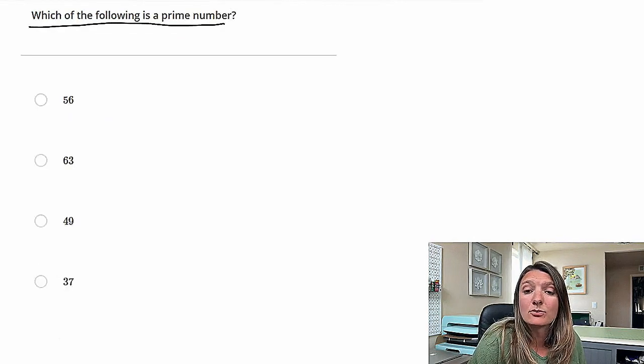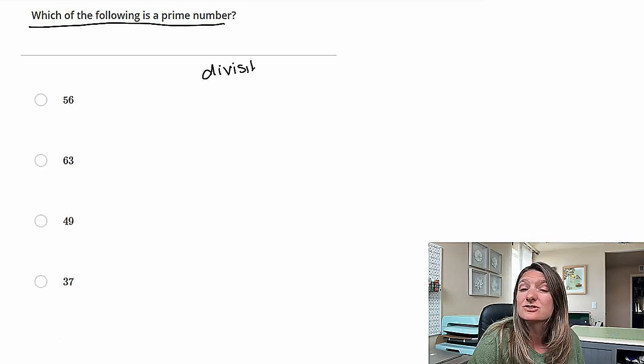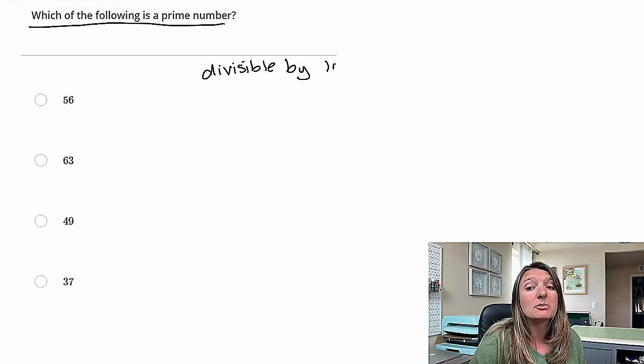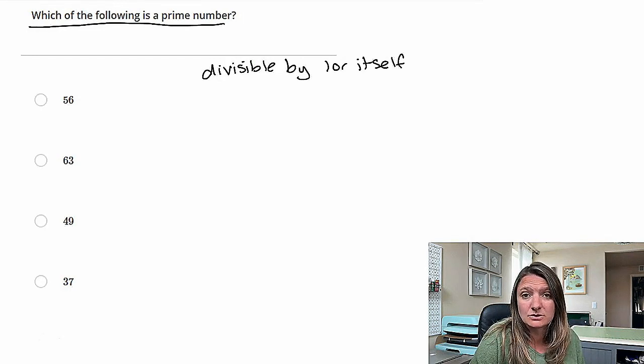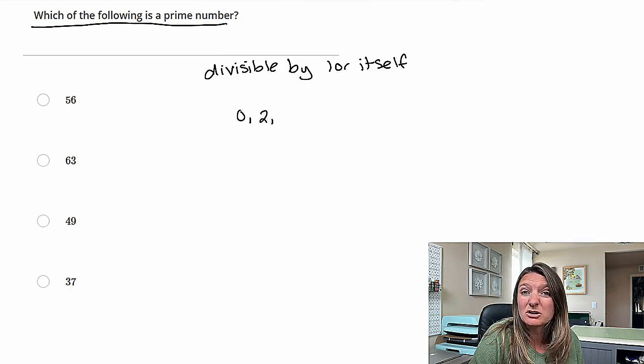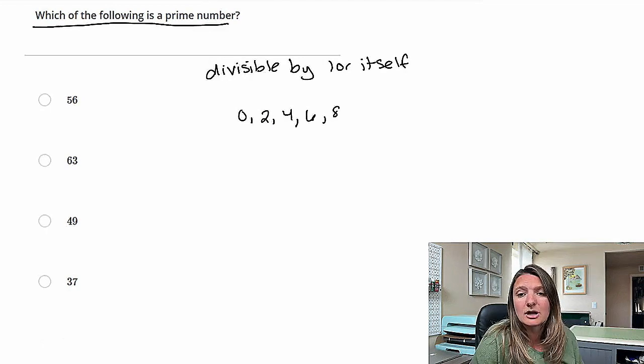Okay, question two. Which of the following is a prime number? So a prime number, just to remind you, is that it is only divisible by one, and it's only divisible by itself. So there's a few different tricks that you can use to try to figure out what is a prime number, especially if they're going to talk to you about bigger numbers than just two-digit numbers. If they're like three or four-digit numbers, I'll give you a couple hints for that.